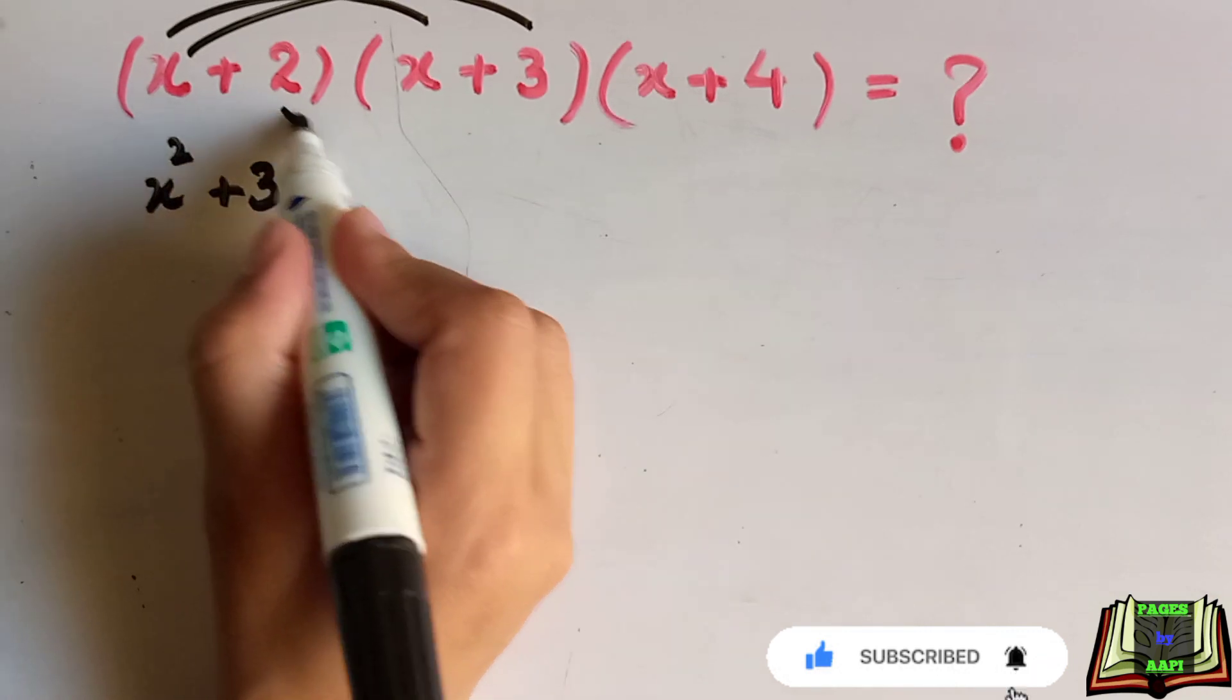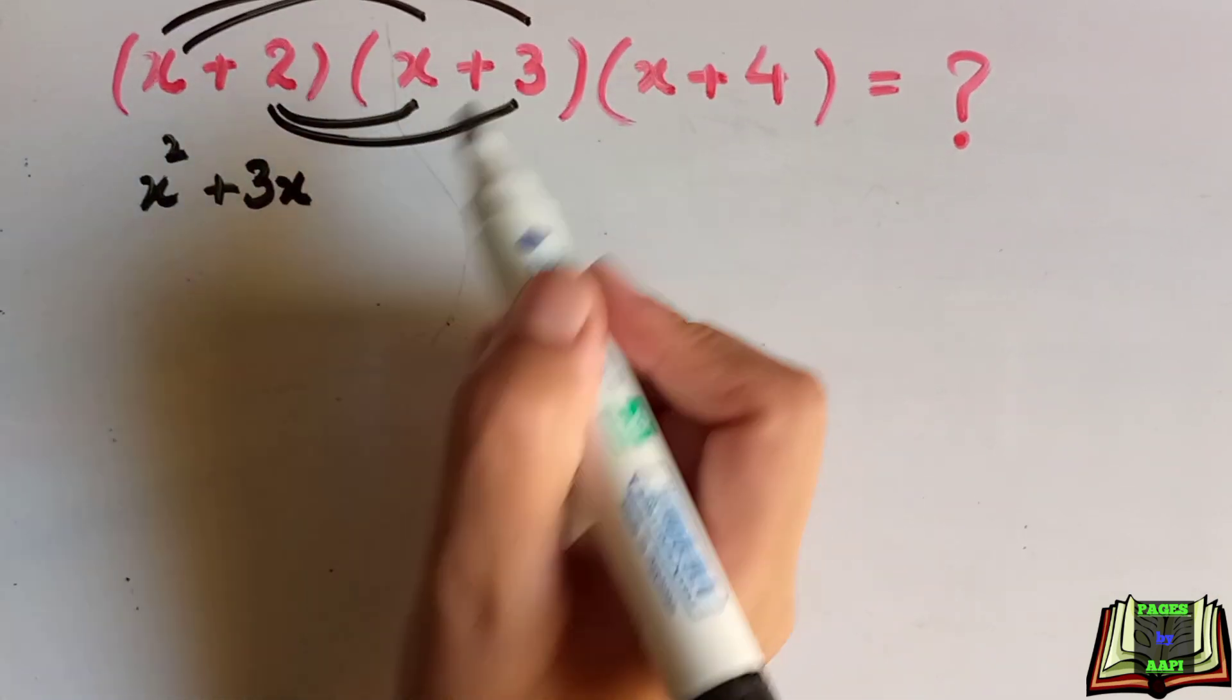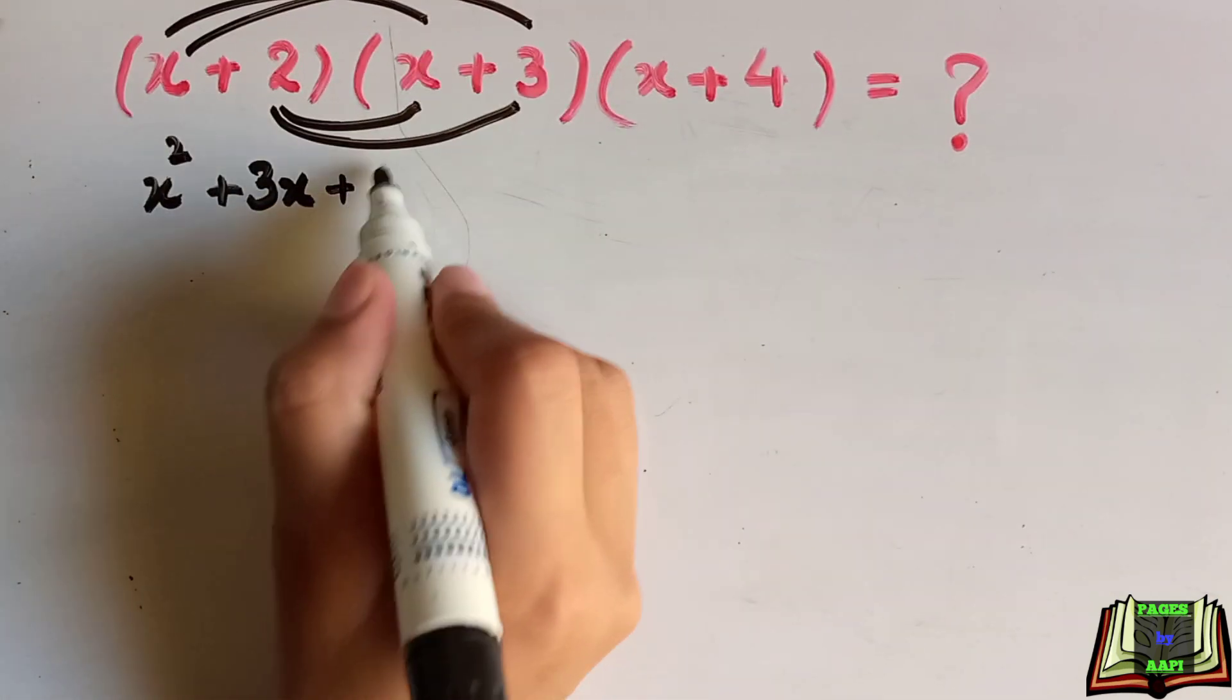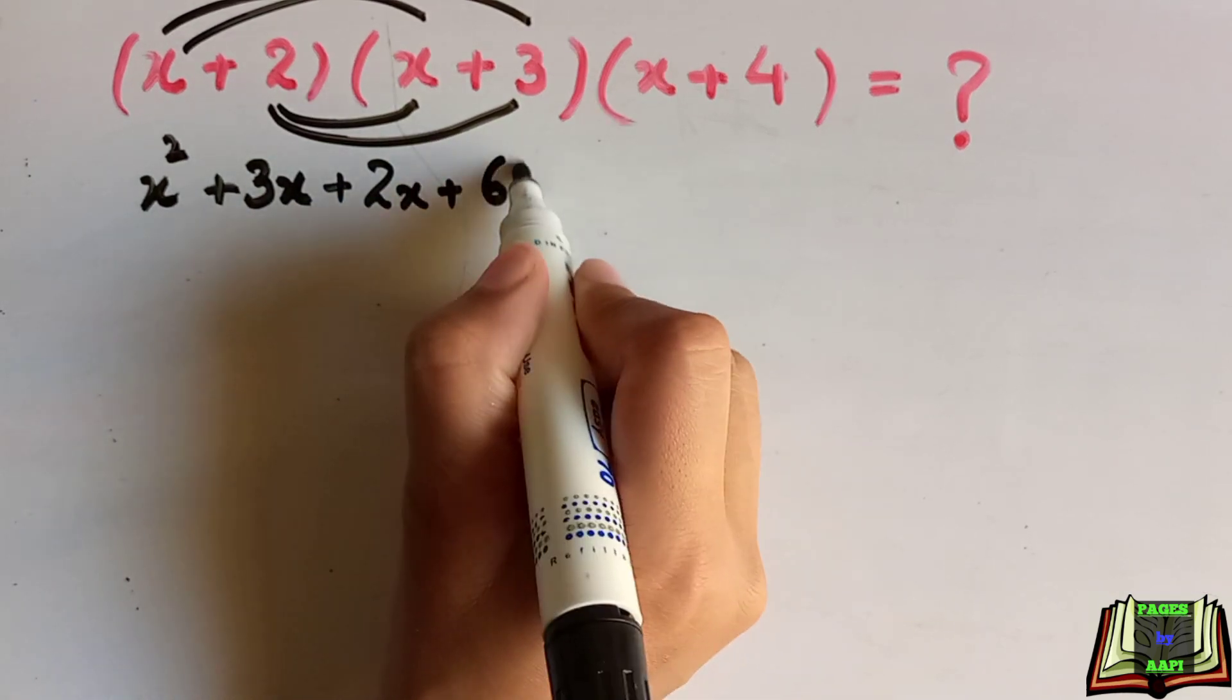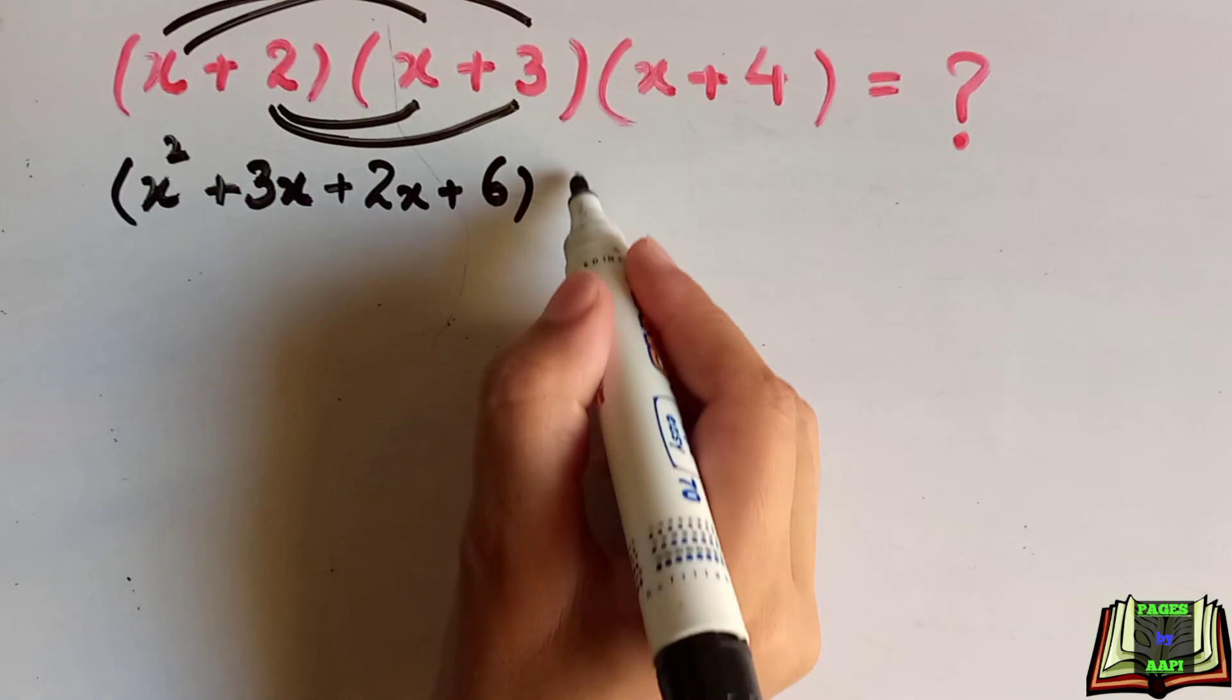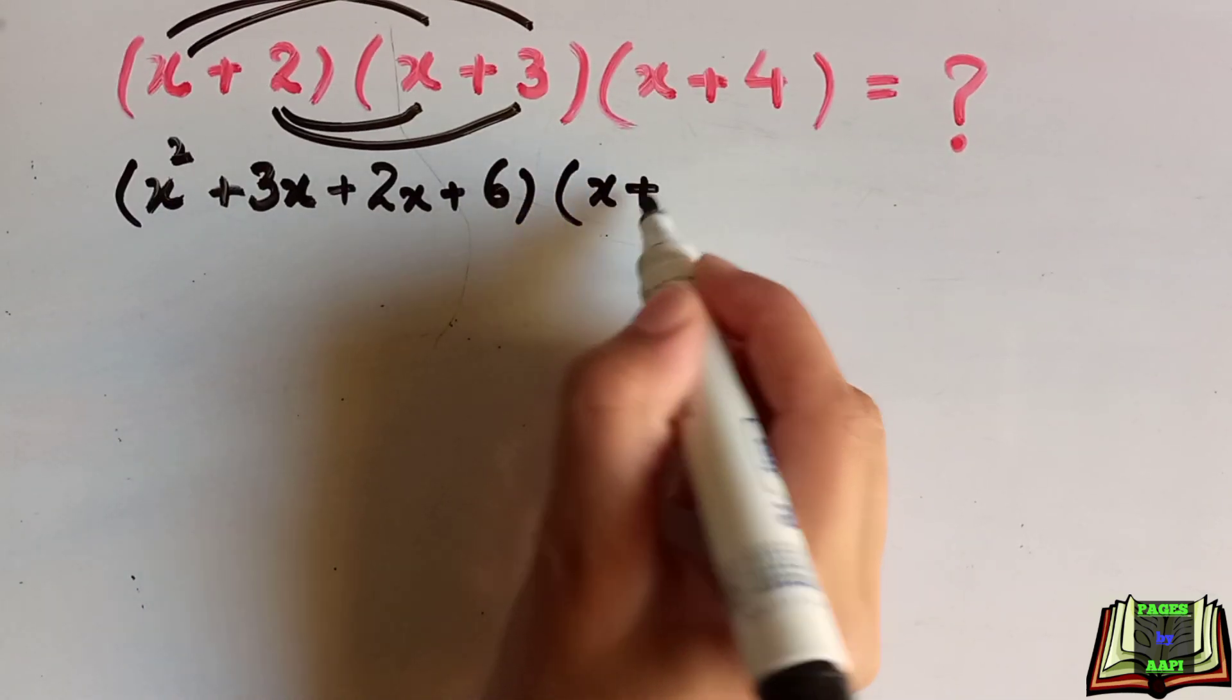Now we will multiply 2 into x and 2 into 3. 2 into x is 2x plus 2 into 3 is 6, and x plus 4 as it is.